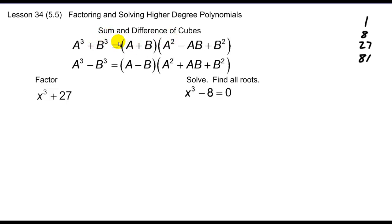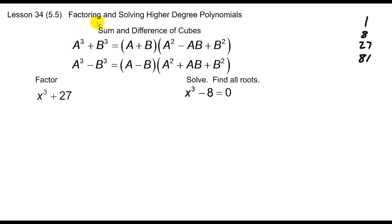We're looking for perfect cubes as our numbers — for instance, 1, 8, 27, 81 are all perfect cubes. If I have one number cubed plus another number cubed and I wanted to factor that, there is a formula for their factoring, and unfortunately you're going to have to memorize that. The formula is: take the sum of the two base numbers multiplied by the quantity of the first base number squared, minus the product of the two bases, plus the second base number squared.